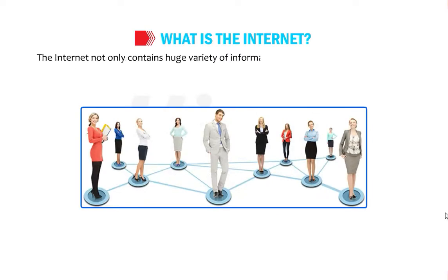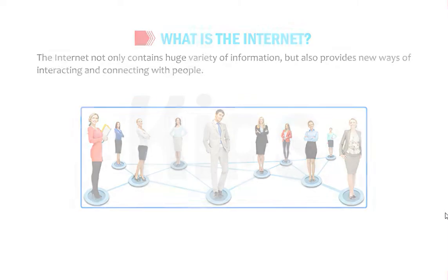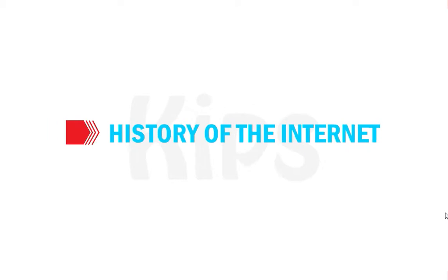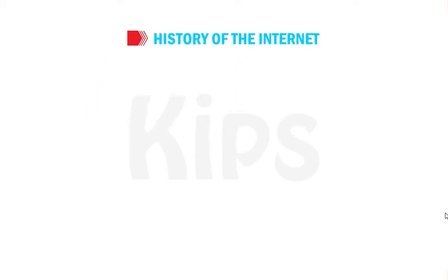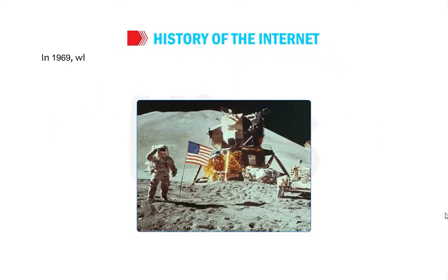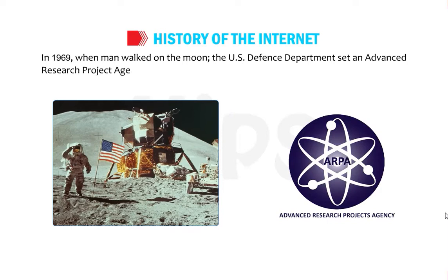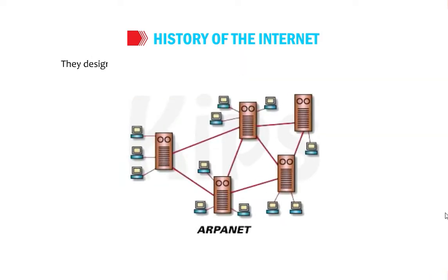The internet not only contains a huge variety of information but also provides new ways of interacting and connecting with people. Now let us study about the history of the internet. In 1969, when men walked on the moon, the U.S. Defense Department sent an advanced research project agency, ARPA, for further research. They designed a network of four computers to exchange and share their data.